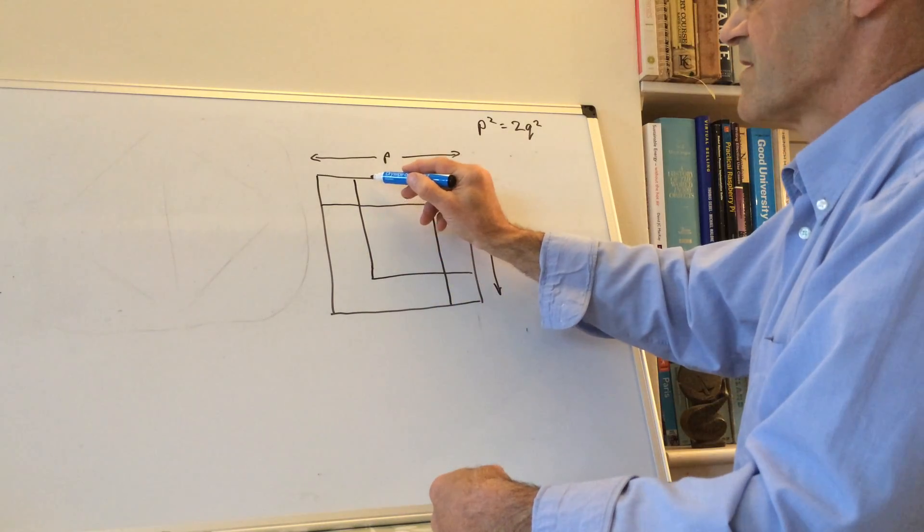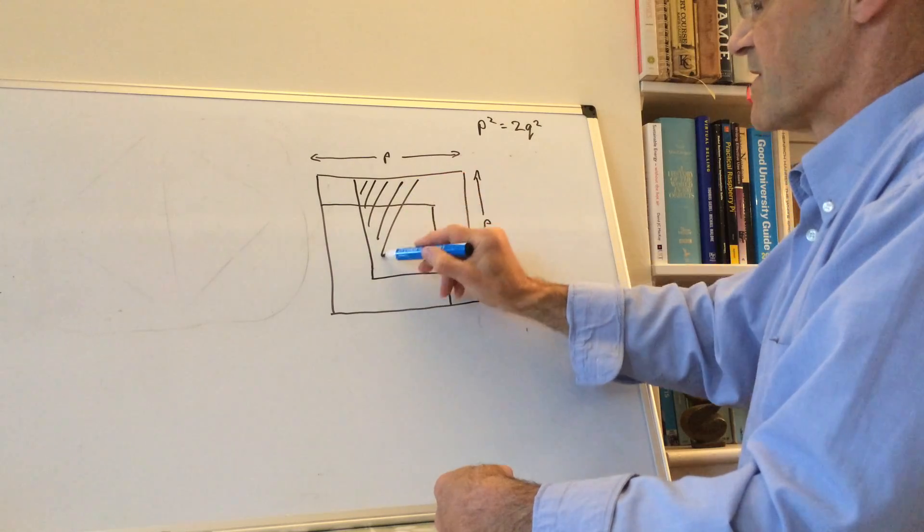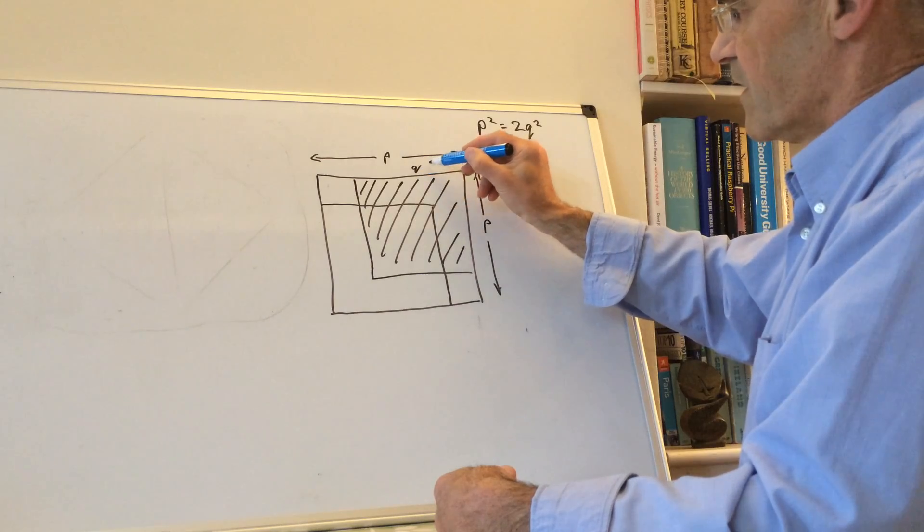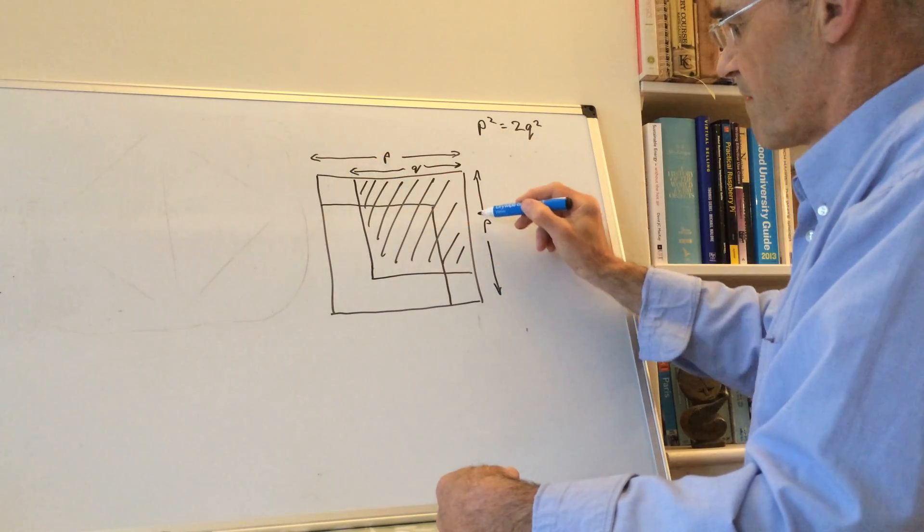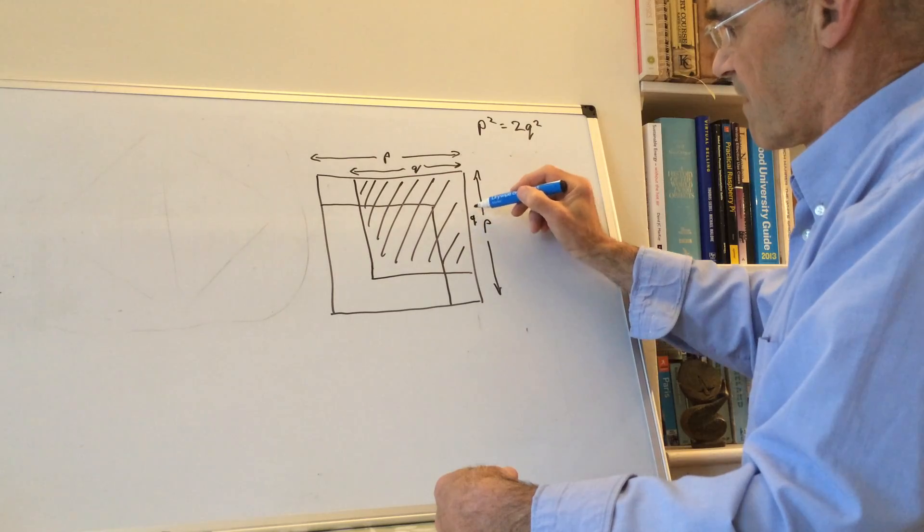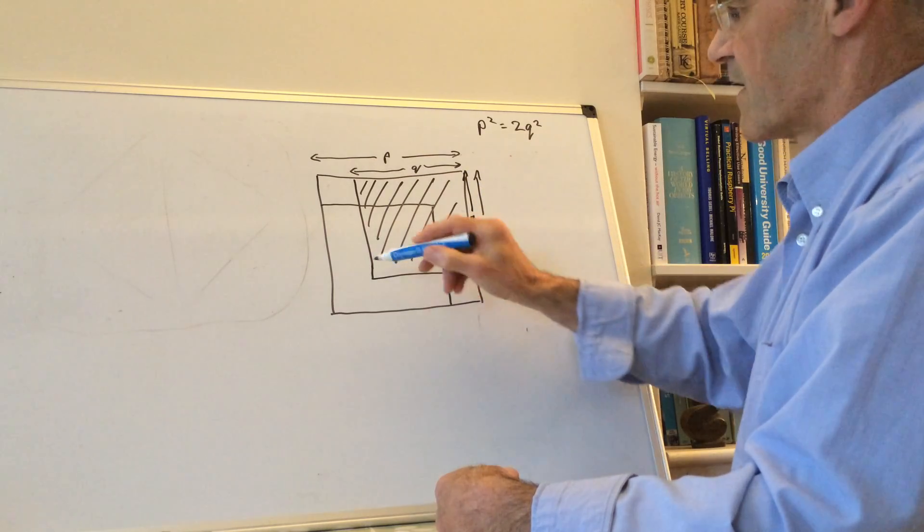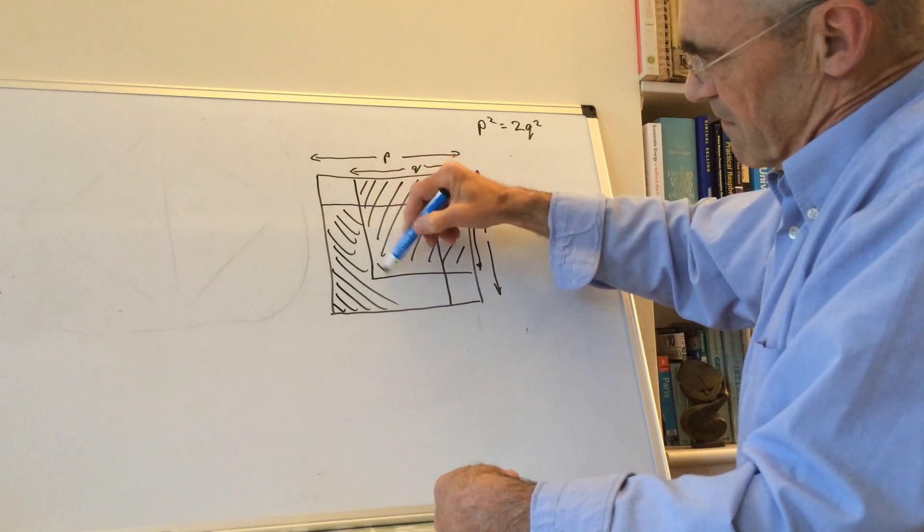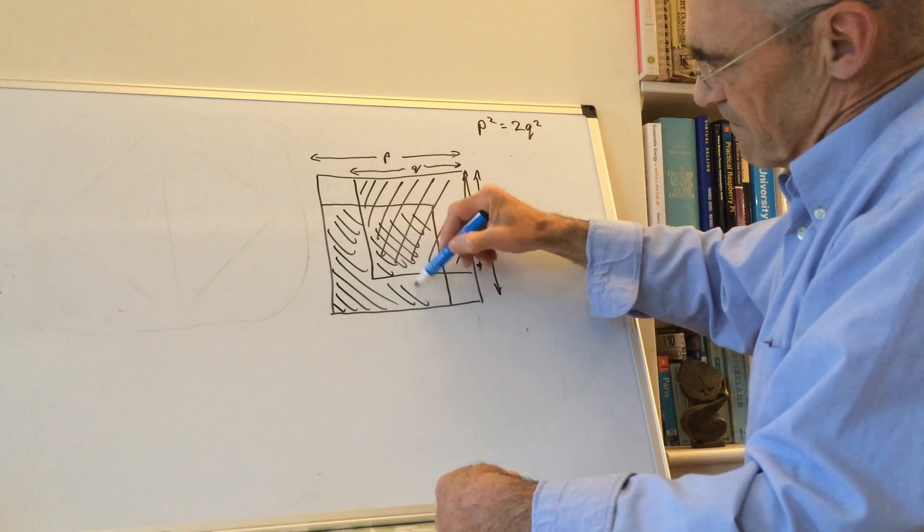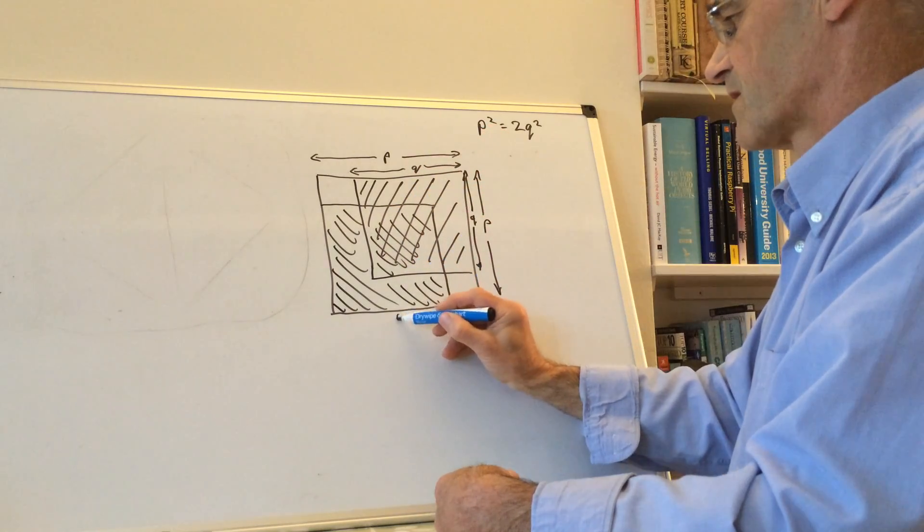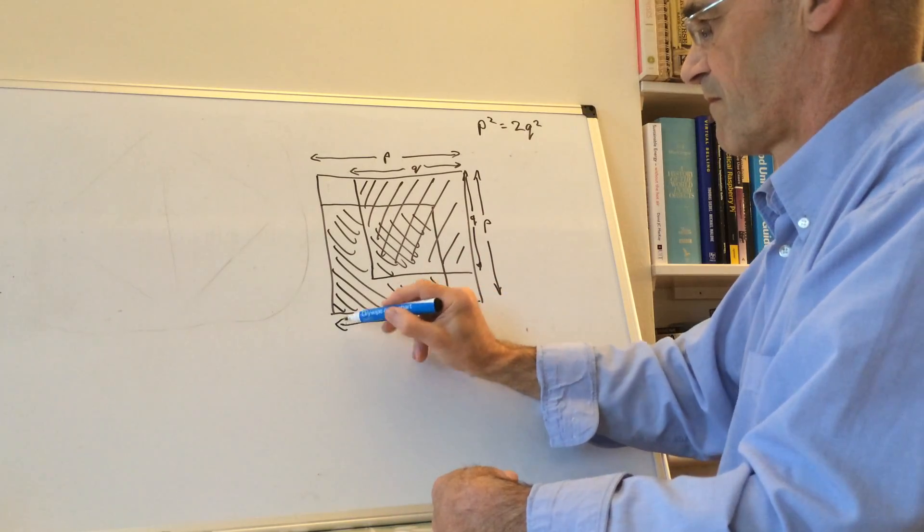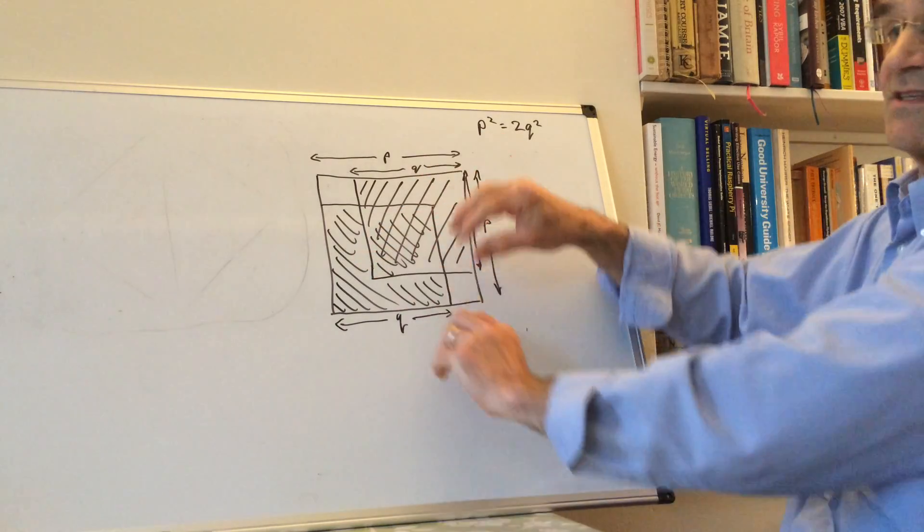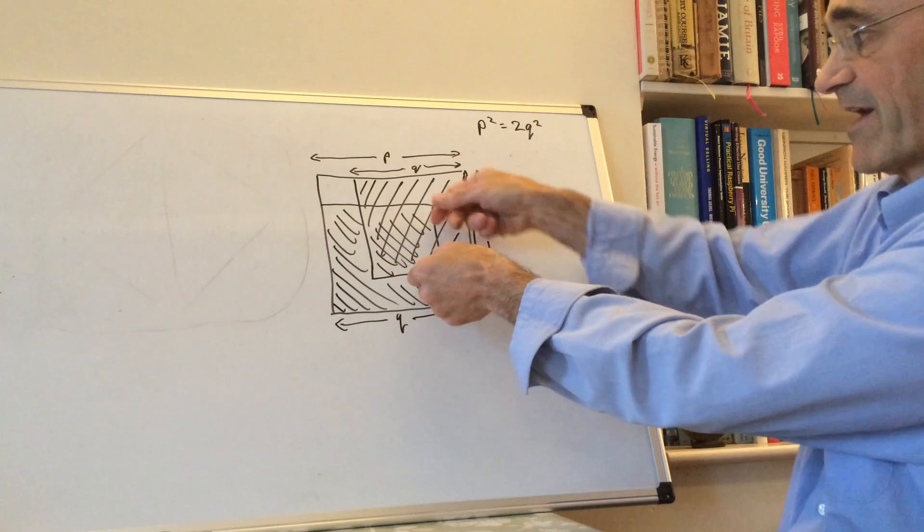So these two smaller squares are of side q, and then there's another one here.